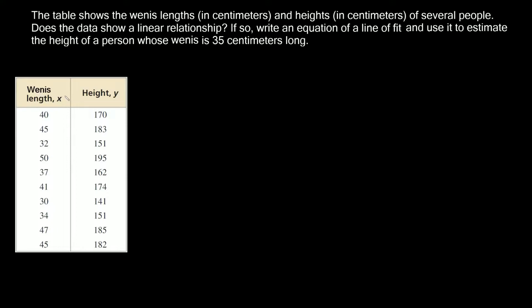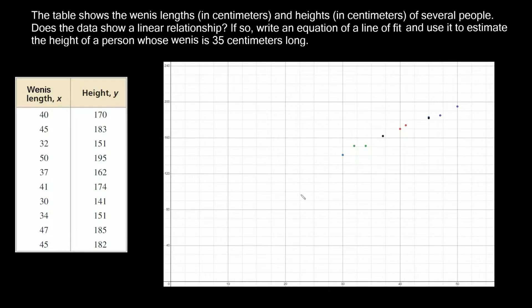The first thing we'd have to do to figure out if there's a linear relationship is just plot these points. These are all our x coordinates and these are all our y coordinates. I've magically graphed these already. Here's the graph right here. Here's all the points from this table. Our x-axis is the wenus lengths and the y-axis is the height.